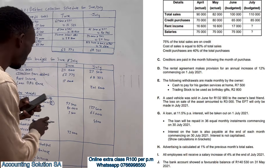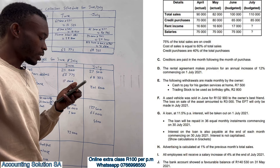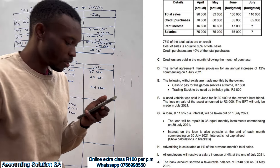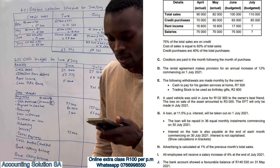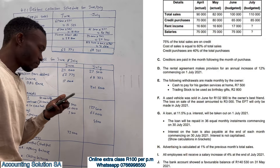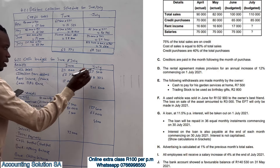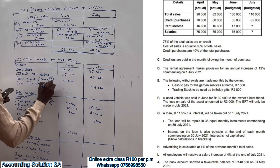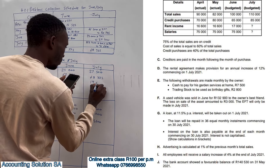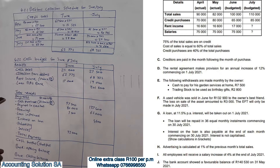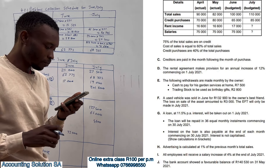Information D: the rental agreement makes provision for an annual increase of 12% commencing 1 July 2021. The rent was 17,000. For July it increases: 17,000 multiplied by 112/100 gives 19,040. So it increases from 17,000 to 19,040.